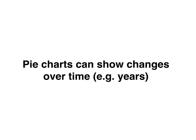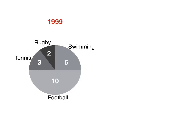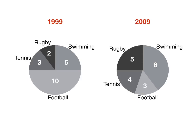Pie charts can show changes over time, for example years. You might see a pie chart for the year 1999 and another one for the year 2009. The categories are the same, so we can talk about the numbers increasing or decreasing from the first year to the second year.